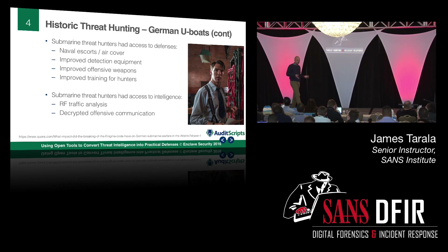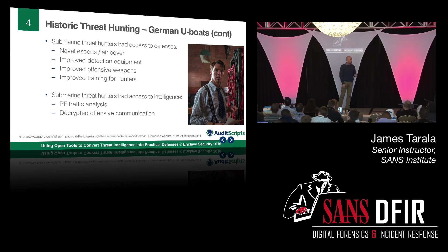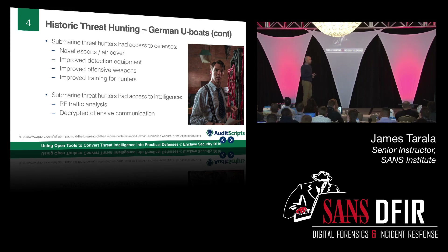What you see right away is the use of naval escorts and air cover — used more predominantly in World War II. In addition, they had improved detection equipment: constant improvements in radio signaling, radar, and sonar capabilities. They also had improved offensive weapons — better depth charges and torpedoes. And there was improved training for the hunters involved, including actively going after the submarines rather than just avoiding them.